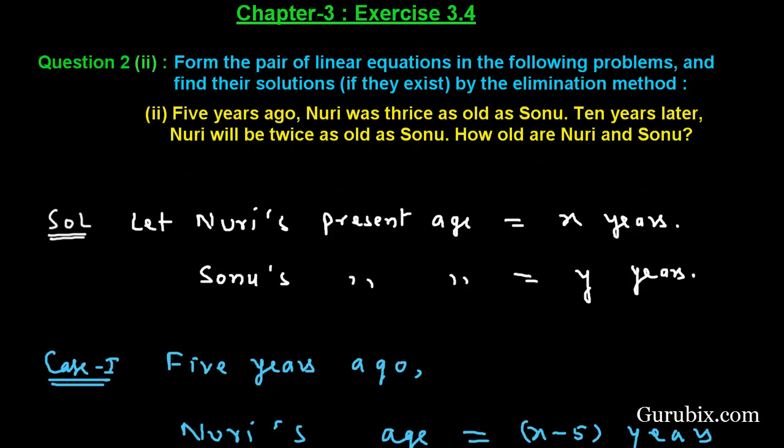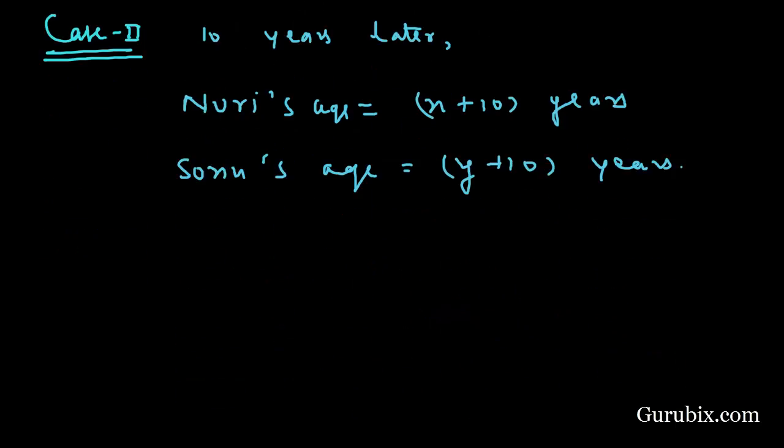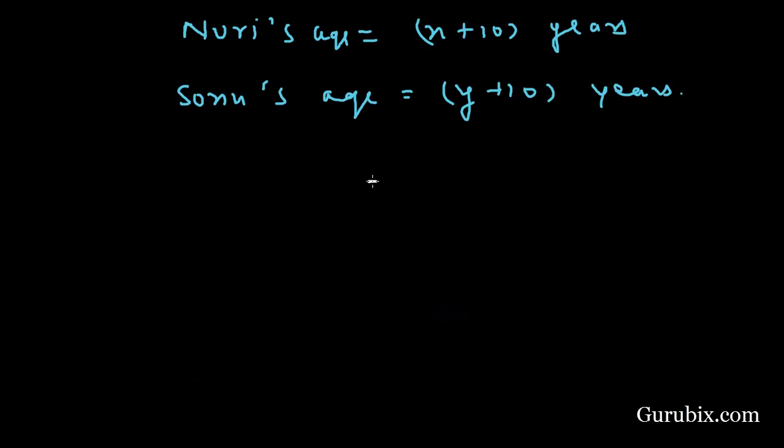The condition is Nuri will be twice as old as Sonu. This means x plus 10 equals 2 into y plus 10. If we further solve it then it will be x minus 2y equals 10. This is our equation number 2. Now we shall apply the elimination method to solve this pair of linear equations.